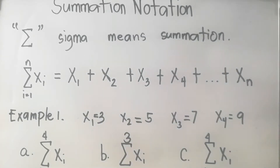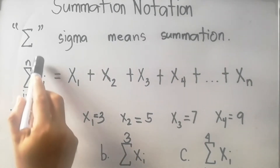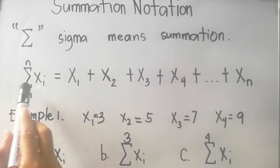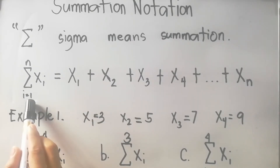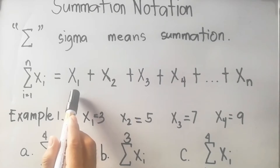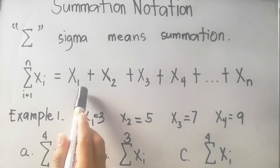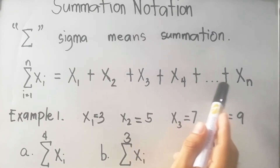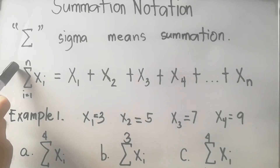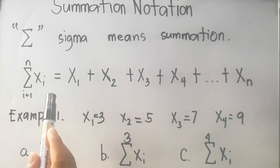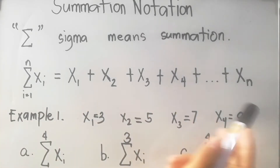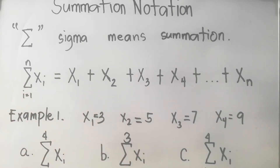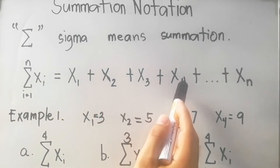To be more specific, let us have this notation and the expanded form. The summation of x sub i where i is equal to 1 is equal to x sub 1, since we start at i equals 1, plus x sub 2 plus x sub 3 plus x sub 4, up to x sub n since we end at n. This means we are adding all the values of x starting at 1 and ending at n, so the subscripts are 1, 2, 3, 4, up to n.